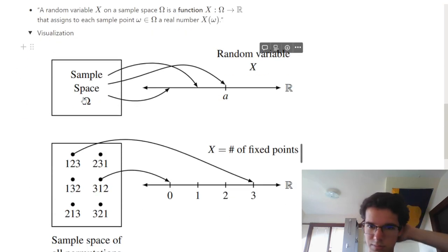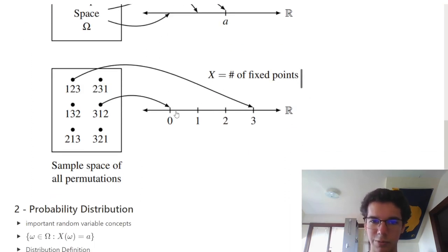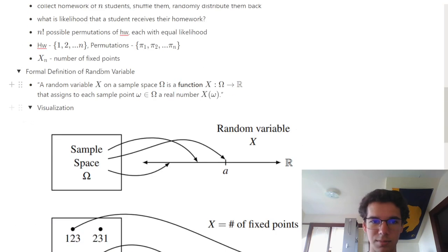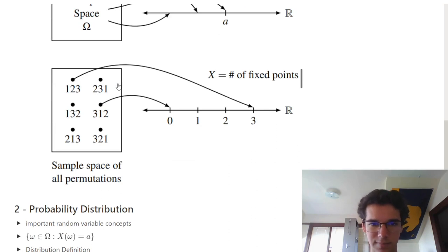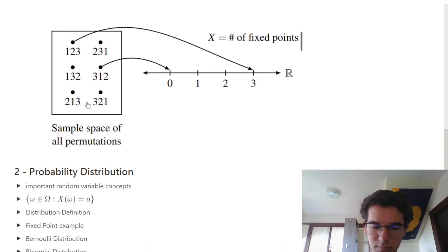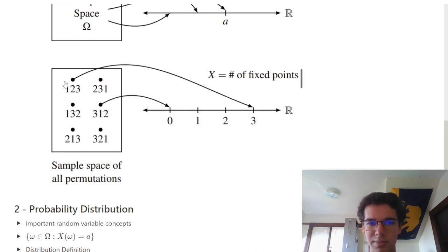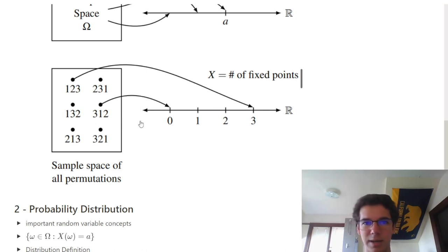To visualize: we have a random variable X, we have our inputs which are points in the sample space, and the image maps out to real numbers. In the range of our event X given the fixed points example with three students, the number of possible fixed points ranges between 0 and 3. There are 3 factorial = 6 possible permutations. This sample point corresponds to 3 fixed points where homework 1 goes back to student 1, homework 2 to student 2, etc. This other point corresponds to 0 fixed points.